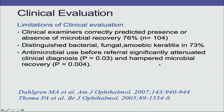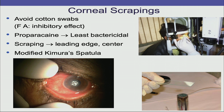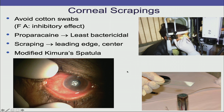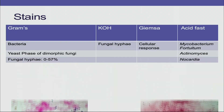If the ulcer is not responding to treatment, it is always best to do microbiology. Corneal scrapes are the mainstay for any case of microbial keratitis. Proparacaine should be used as it is least bactericidal, and scraping should be done from the leading edge as well as the center of the ulcer. A 15-degree blade is generally used, although a modified Kimura spatula is recommended.